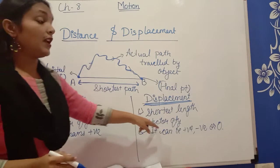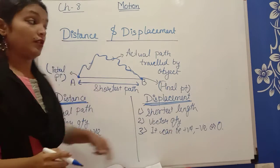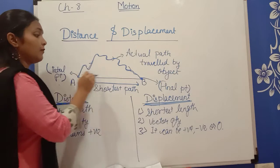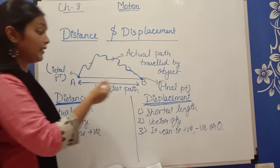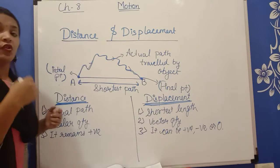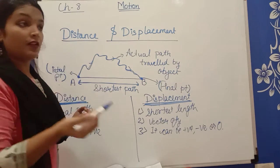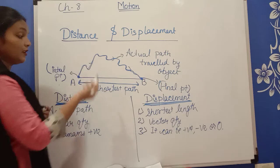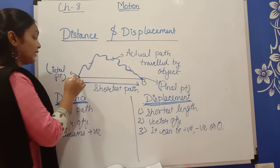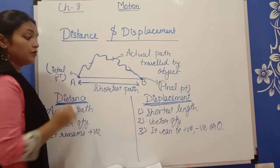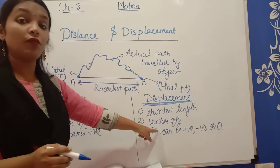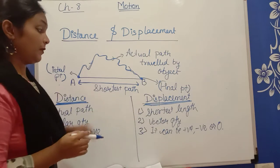But displacement is a vector quantity. Why? Because we know the direction — we are going left or right, or which path we are going, north or west, or where we are going. We know exactly our magnitude. This is why we count displacement as a vector quantity.